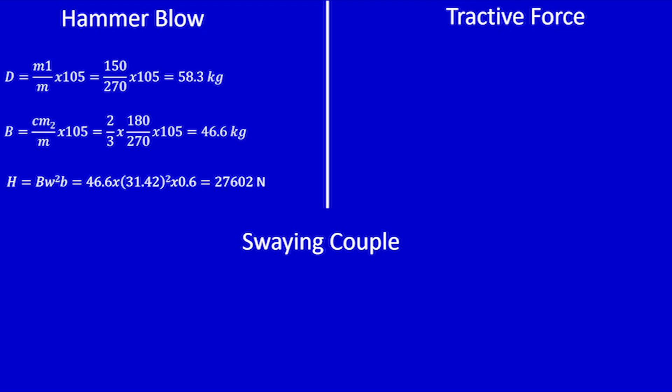Finally, I am going to calculate hammer blow, tractive force, and swaying couple. The balancing mass is 105 kg. From that we can find the balancing of rotating mass and reciprocating mass. Rotating mass equals 58.3 kg; reciprocating mass equals 46.6 kg. Hammer blow H equals m·ω²·r, where m equals 46.6, ω equals 31.42, and r equals 0.6. Multiplying these parameters gives H equals 27,602 N.